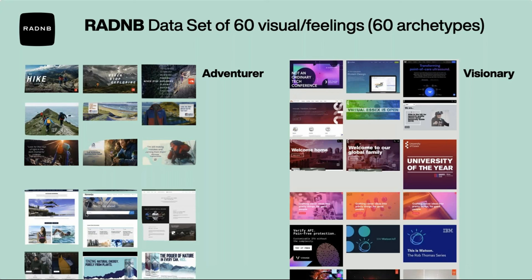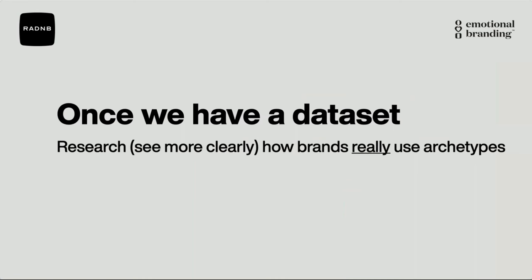Behind each of these archetypes is a visual dataset of real brand images that helps bring to life the emotional needs and feelings of the archetypes. For the first time, we can look and say: this is what an adventurer feels like, this is what a shape-shifter or a visionary or a muse feels like. All the images have been calibrated so there's a distinct look and feel that matches the archetype. But images are rarely just one archetype — most are themselves a blend of archetypes. So through Radenby we are able to identify what certain combinations of different archetypes look and feel like, and once we have that dataset we can start seeing more clearly how brands use archetypes.